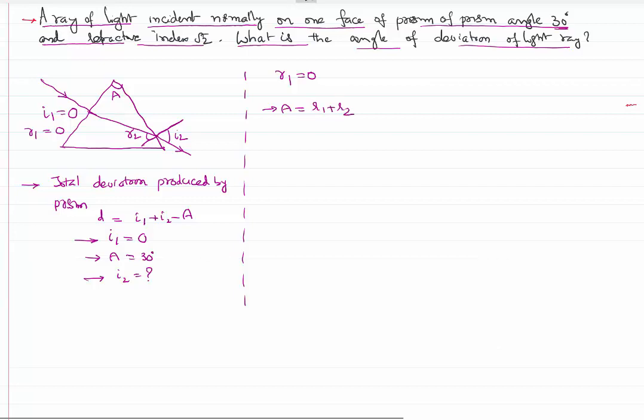It is also given that refractive index of the prism is root 2. Knowing r2 on the second surface, sin r2 is automatically sin 30. Using Snell's law, n equals sin i2 over sin r2. That implies sin i2 equals root 2 times sin 30.